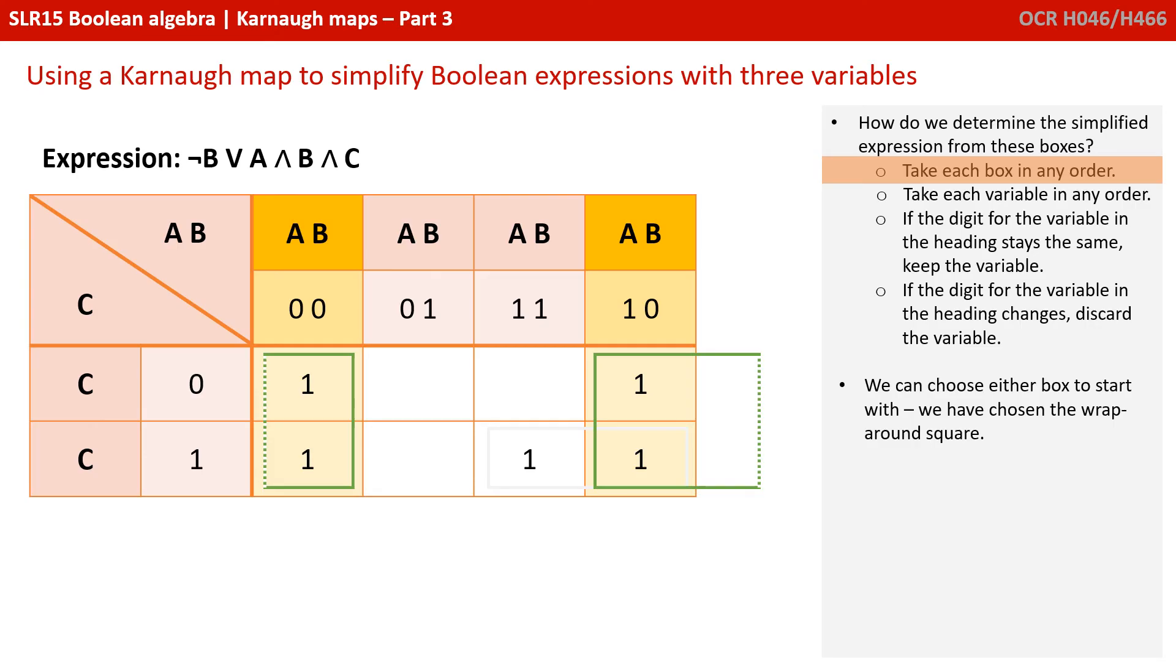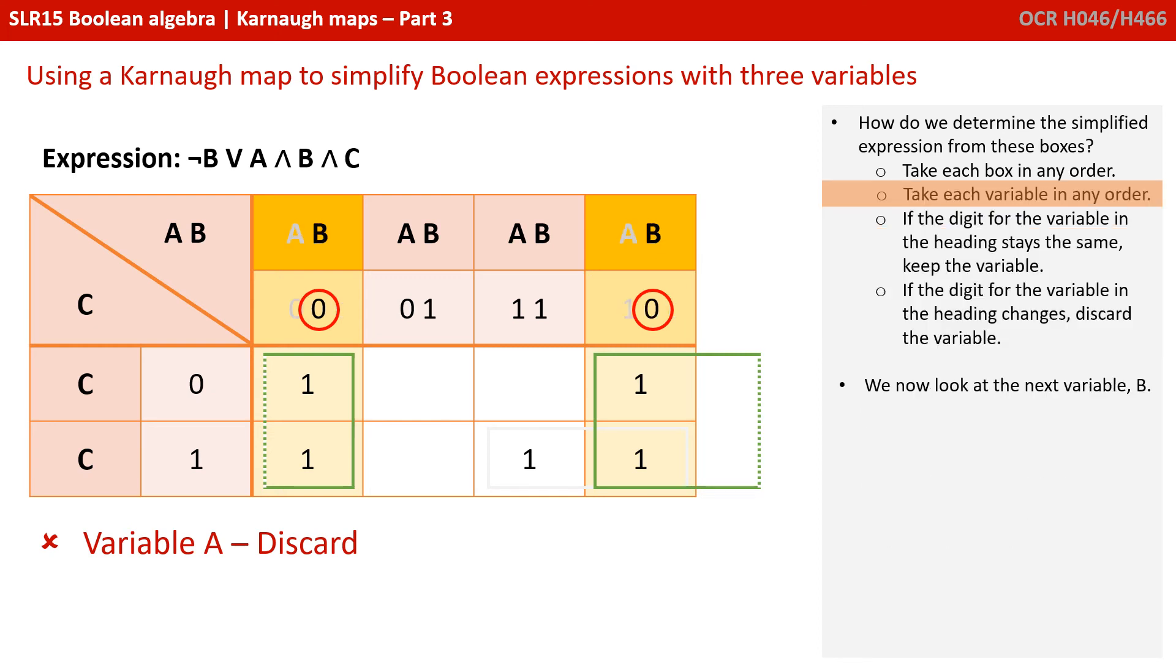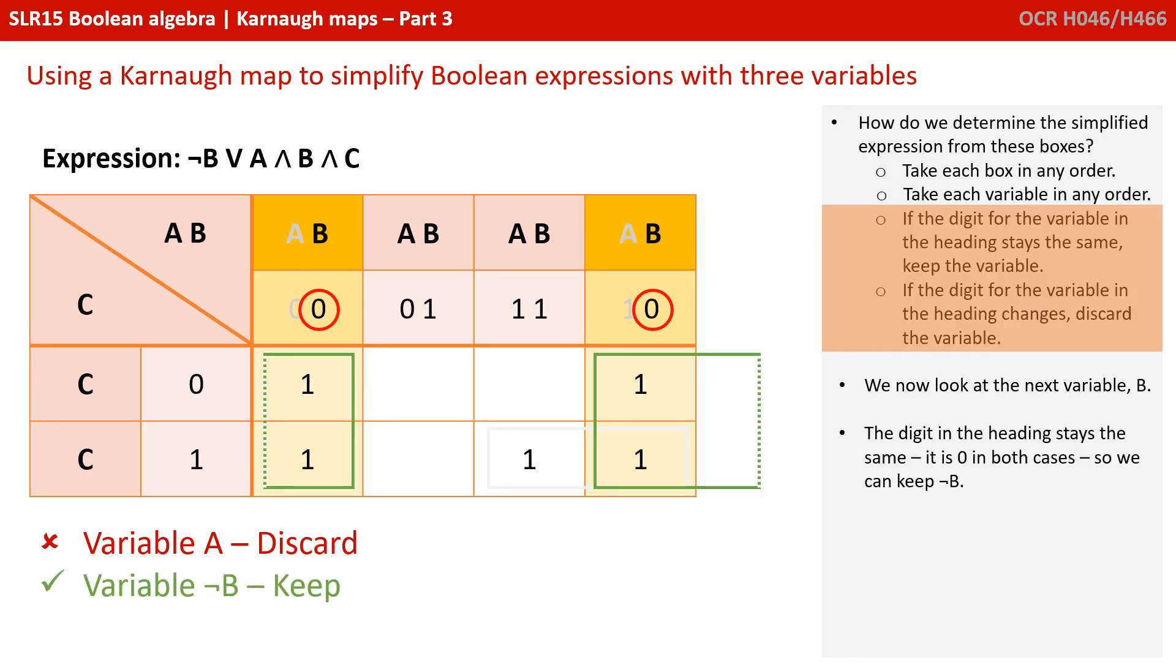So we're going to follow the same algorithm as before. We can choose either box to start with. We've chosen the wraparound square. And we're going to start by taking variable A. We can see the heading for variable A changes from a 0 to a 1. So we discard variable A. We move on to variable B. Now, this time, the digit in the heading stays the same. There are two columns in this Karnaugh map where we're considering this first box. And in both of those columns, the heading for B is a 0. So we can keep NOT B. Now pay attention there. We're keeping NOT B. We're not keeping B because it's a 0 in both headings. That's the term we're keeping. And the 0 means false. So we're keeping NOT B.